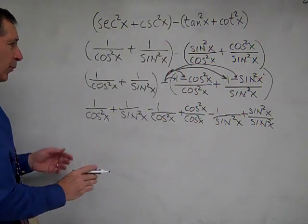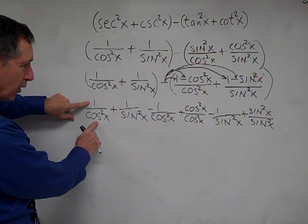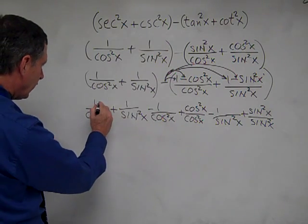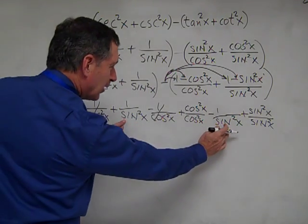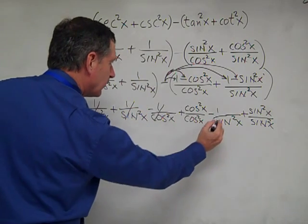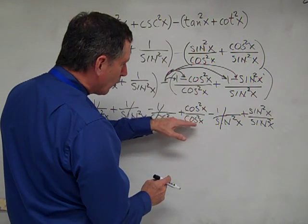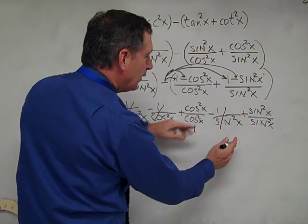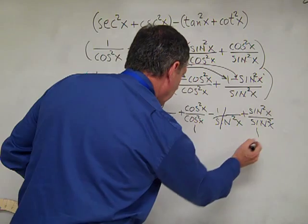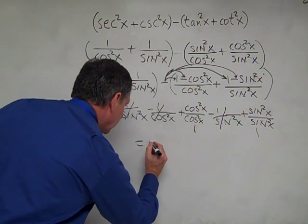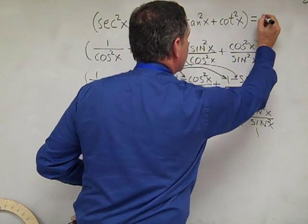Now we simplify by canceling. We have 1 over cosine squared x minus 1 over cosine squared x, so those two terms cancel. We're left with cosine squared x over cosine squared x, which equals 1, and sine squared x over sine squared x, which also equals 1. So our remaining result is 2.